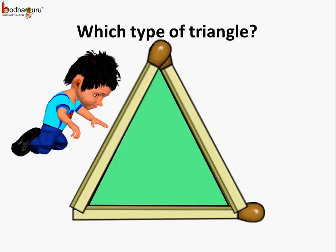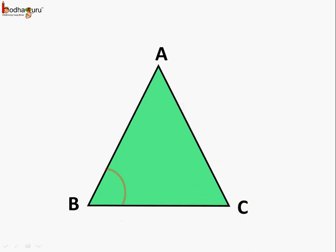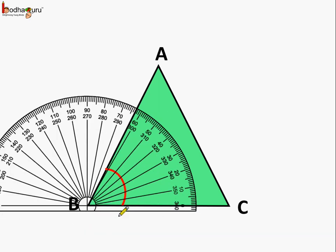Now this is another triangle which Amand made. What is special about it? It has two angles that are equal. In this triangle, this is angle B. If we measure it — 10, 20, 30, 40, 50, 60, 61, 62, 63 — angle B is equal to 63 degrees.